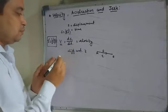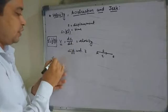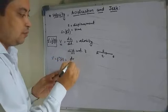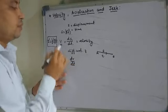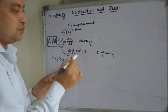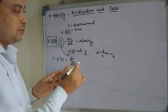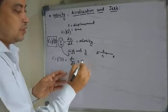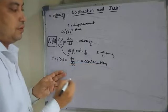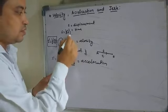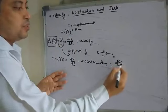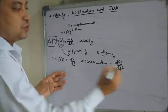S'' or dV/dt means this velocity is differentiated with respect to time T. That is dV/dt — it is called acceleration. This acceleration is in the form of dS/dt, that is d²S/dt².